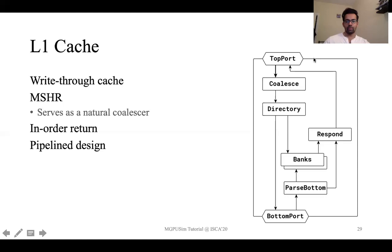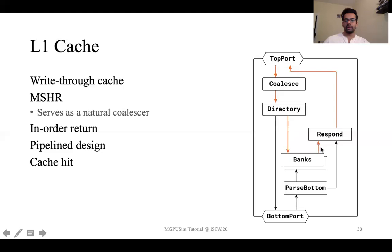The L1 cache diagram is shown on the right-hand side figure. The first thing to note is the top port, which is responsible for receiving requests from the compute unit. Once it receives a request, it is sent to the coalesce stage, which merges requests going to the same cache line. Once the coalesce stage is complete, we go to the directory stage where the actual read happens by reading at the bank. In case of an L1 cache hit, this data is returned to the compute unit via the top port.